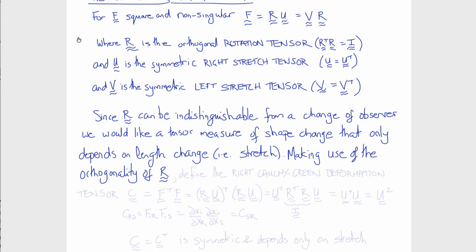So we define the right Cauchy-Green deformation tensor, which is conventionally called C, by C equals F transpose F. F transpose would be (RU) all transpose times RU. And recall that the transpose of a product is the product of the transposes, but in the opposite order. So that gives us U transpose R transpose RU. But R transpose R is I, the identity tensor, which leaves us U transpose U. And since U is symmetric, that would be the same as U squared.